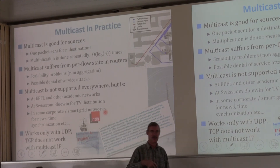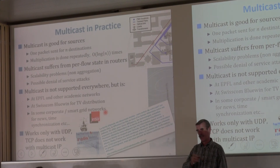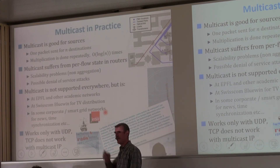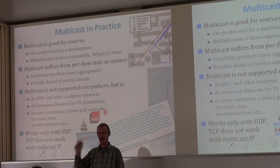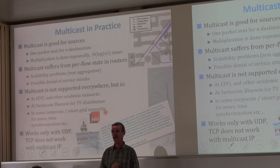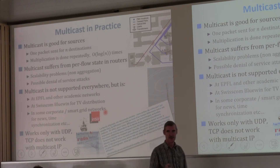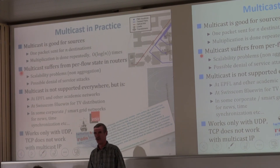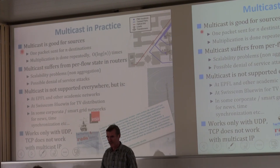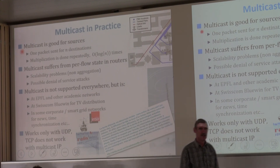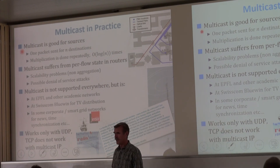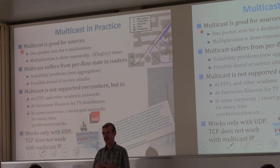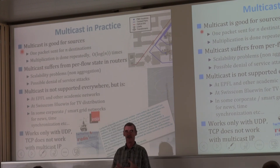Multicast is used in smart grid networks and corporate networks — for example, sending flight information to 1000 displays at an airport. In a smart grid, PMUs that sense the electrical state can send to a multicast address and multiple devices — protection systems, statistics tools, SCADA monitors — all receive it. It's good for sources: you send only once, so you don't need a high-performance video server, just a reliable one. Industrial sensors are kept simple by sending only once.